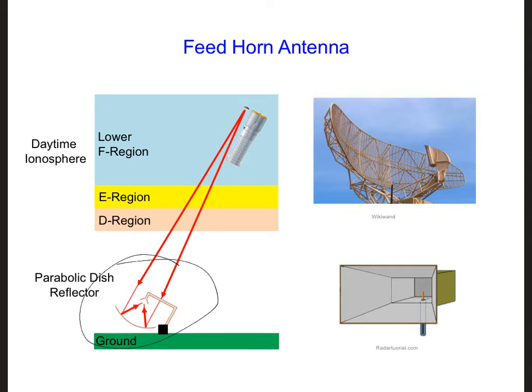On the ground, satellite signals are typically received using parabolic dish reflectors, which help to collect more of the energy from the wave so that a stronger signal can be received here at the feed. The required area of the dish reflector depends on how strong of a signal we're expecting from the satellite.